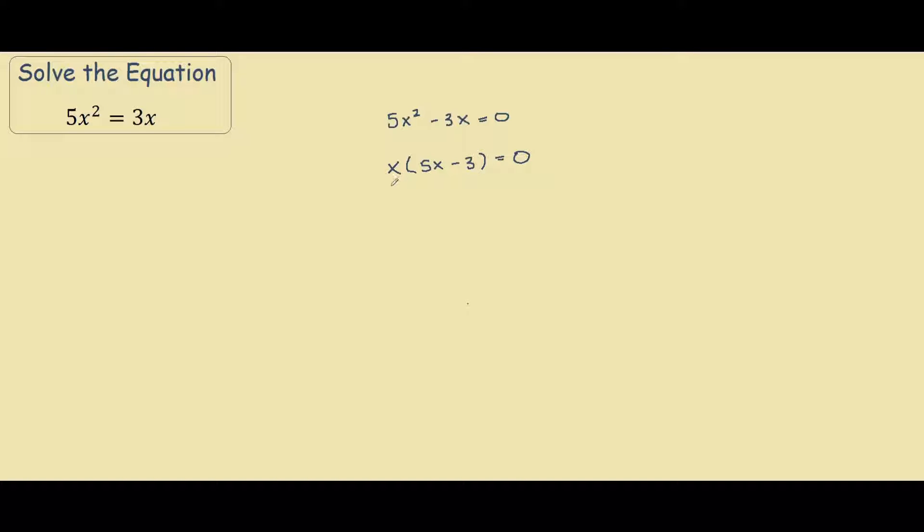Now there are two parts that we want to focus on. Our first part is this one, and our second part is this term. We focus on these two terms because we want to find a value of x so that when multiplied by the other part, it will equal 0. And as we know, anything times 0 equals 0.